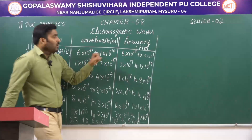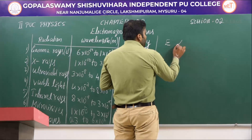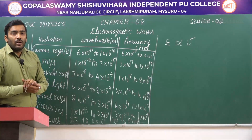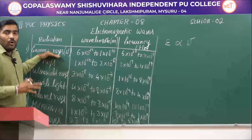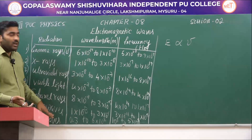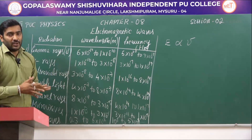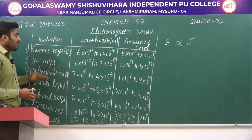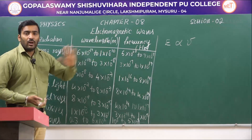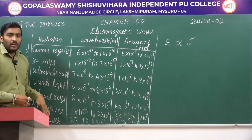Gamma rays have the highest frequency and radio waves have the lowest. Since the energy of an electromagnetic wave is directly proportional to its frequency, gamma rays have the highest frequency and are therefore the most energetic rays among all electromagnetic waves. This is about the electromagnetic spectrum, where the seven waves are classified on the basis of wavelength and frequency ranges.